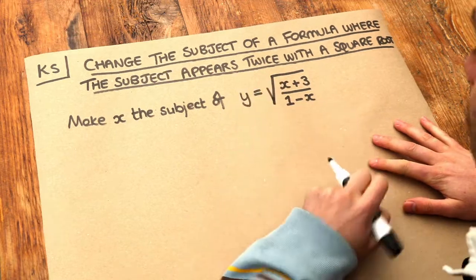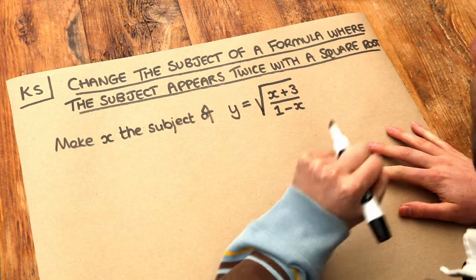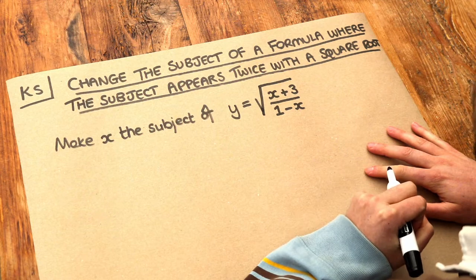So we've got the square root in this particular equation. We want to make x a subject. That means to get x on its own on one side of the equation only.